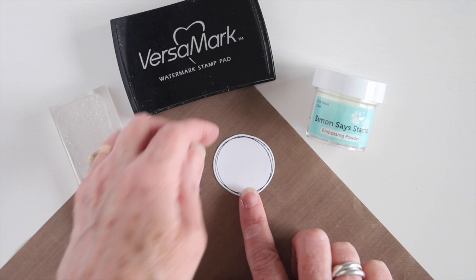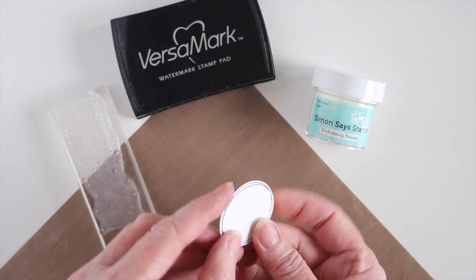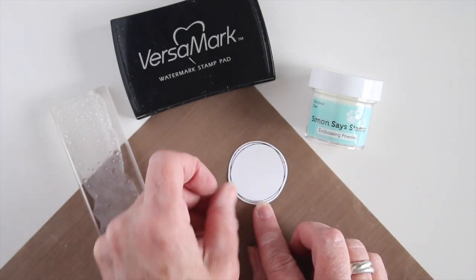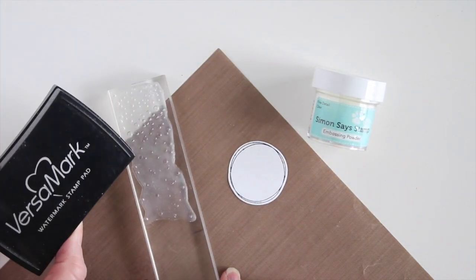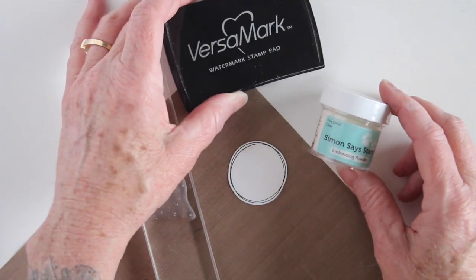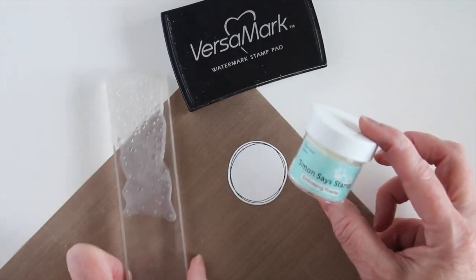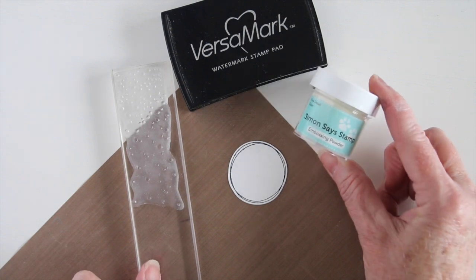Heat embossing is another popular way to create a resist. So here I have stamped my image onto regular white Neenah cardstock. And how I've done that is I've used my Versamark ink with my stamp. I've stamped onto my paper. And then I've sprinkled it with my clear embossing powder and then I heat set that.